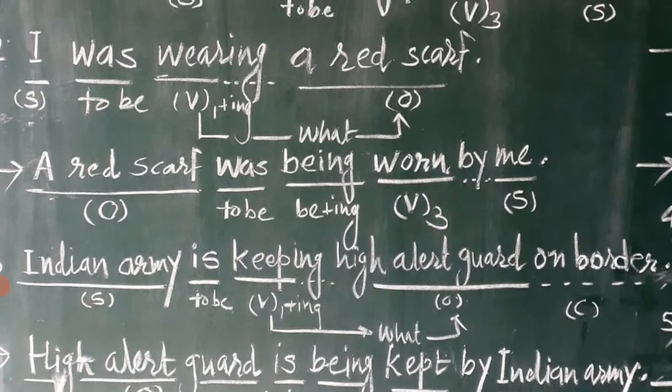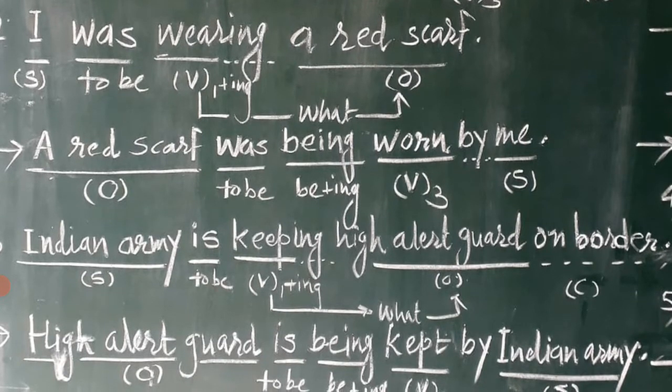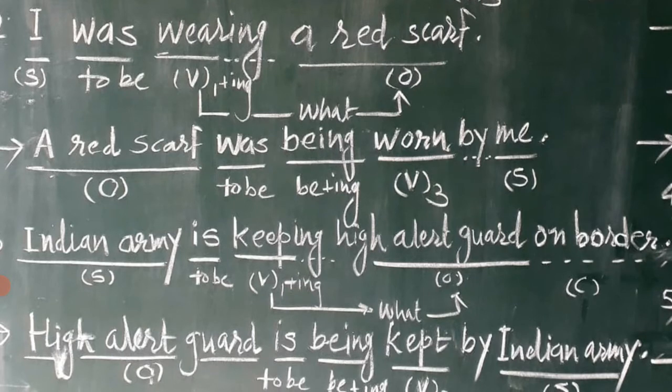Every action verb — whether in first form, second form, or having the ing form — is always converted into past participle form. So wear, wore, worn. Here it is worn, W-O-R-N. And finally, by — I is replaced by me — by me. A red scarf was being worn by me. This is how a past continuous tense sentence is converted into passive voice.